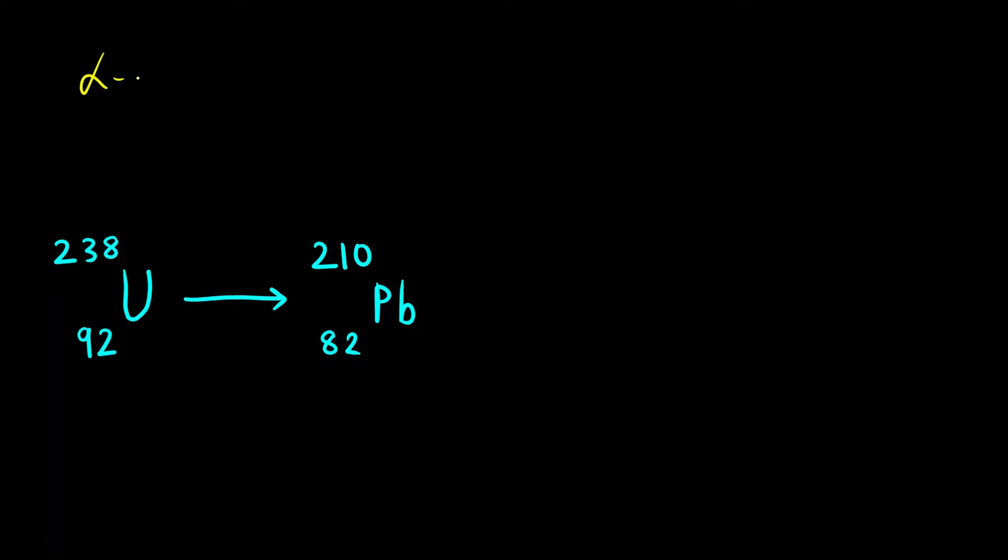First let us understand what is an alpha particle. Alpha particle is nothing but a helium nuclei with atomic number 2 and mass 4. What is a beta particle? Beta particle is an electron. How do you represent an electron? Atomic mass is 0, atomic number is minus 1, charge is minus 1.